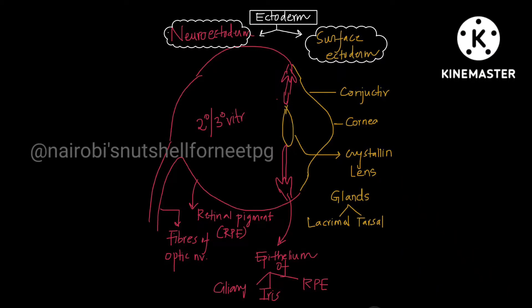Divide ectoderm into neuroectoderm and surface ectoderm. Surface ectoderm derivatives are all the yellow colored parts, that is the anterior ones: conjunctiva, cornea, crystalline lens, and a few glands like lacrimal and tarsal. All these five are derived from surface ectoderm, towards the anterior external surface. Remember it like that.